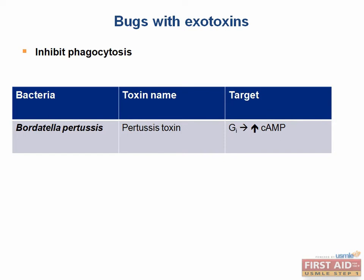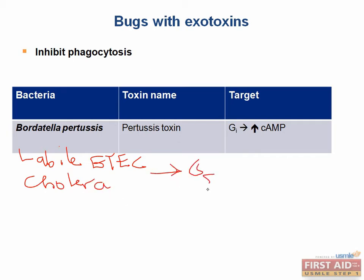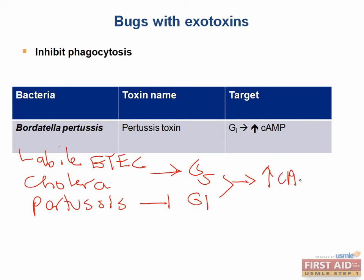Let's review which bacterial toxins affect cyclic AMP production. Two bacterial toxins permanently activate Gs: the heat-labile toxin of ETEC and cholera toxin of Vibrio cholerae. Pertussis toxin inhibits Gi — both mechanisms cause increased cyclic AMP production. The toxin that mimics adenylyl cyclase activity directly is edema factor of Bacillus anthracis.